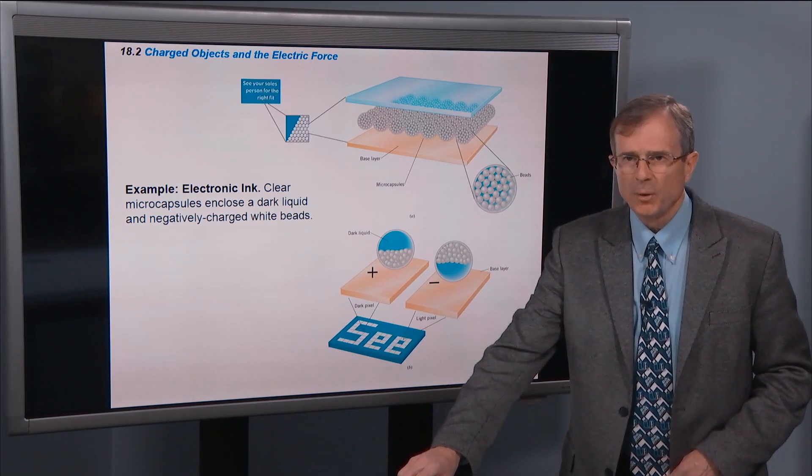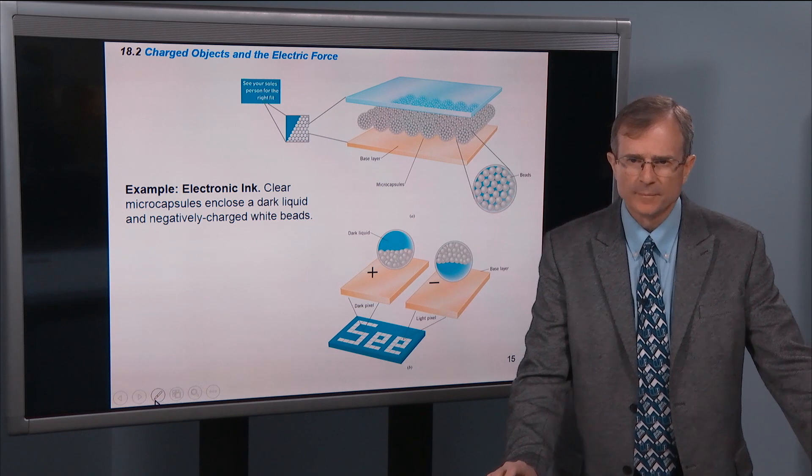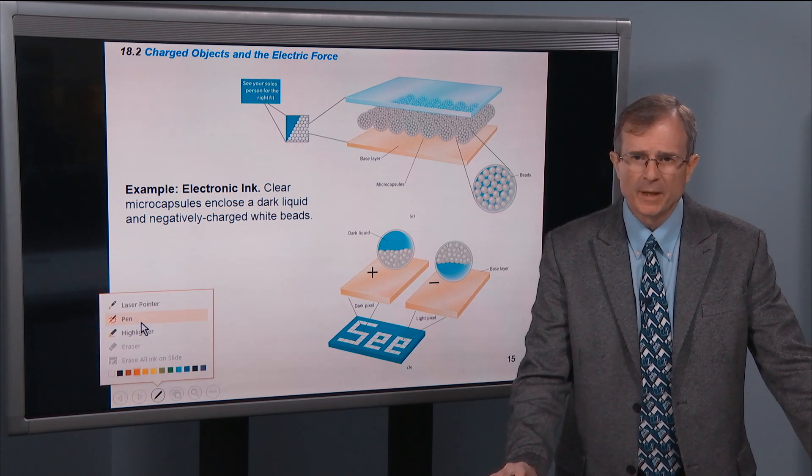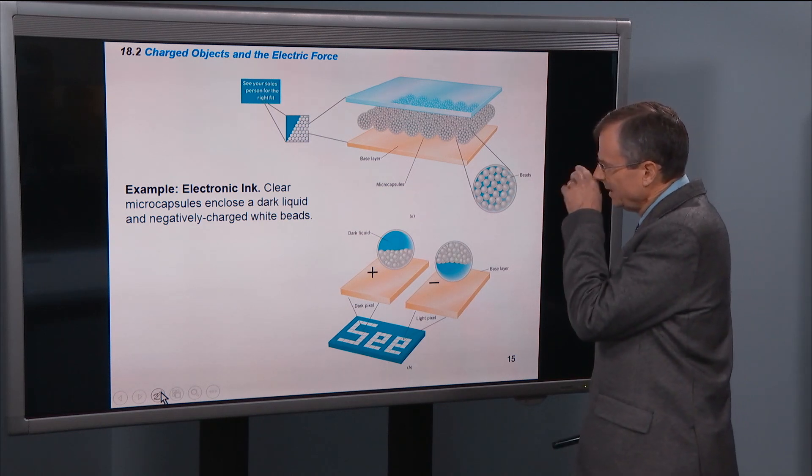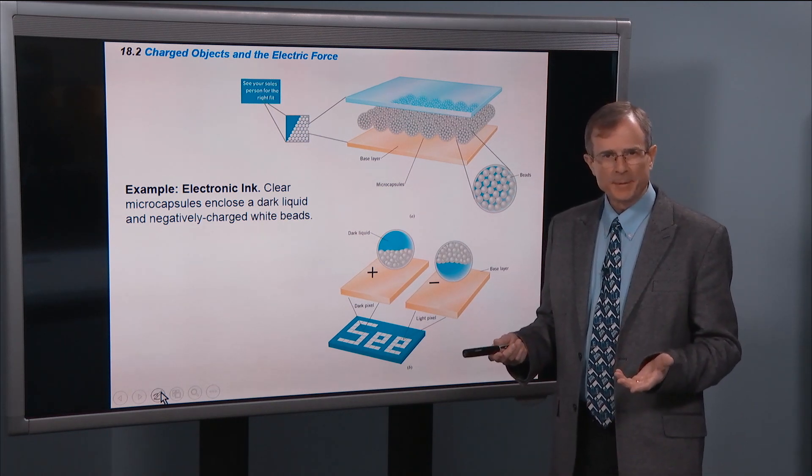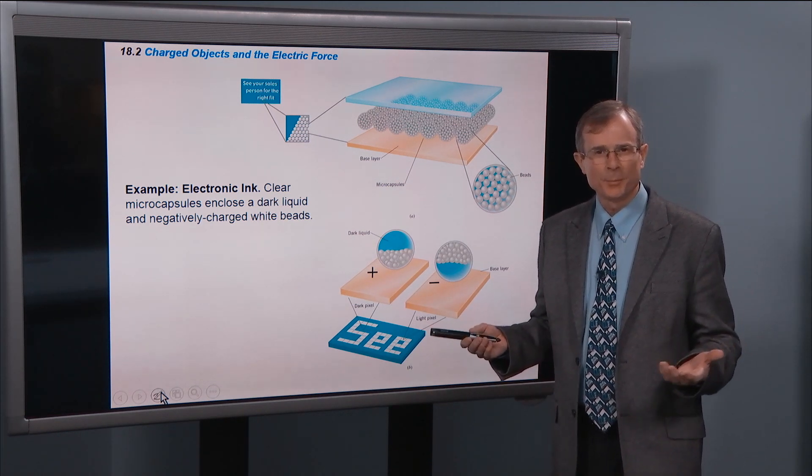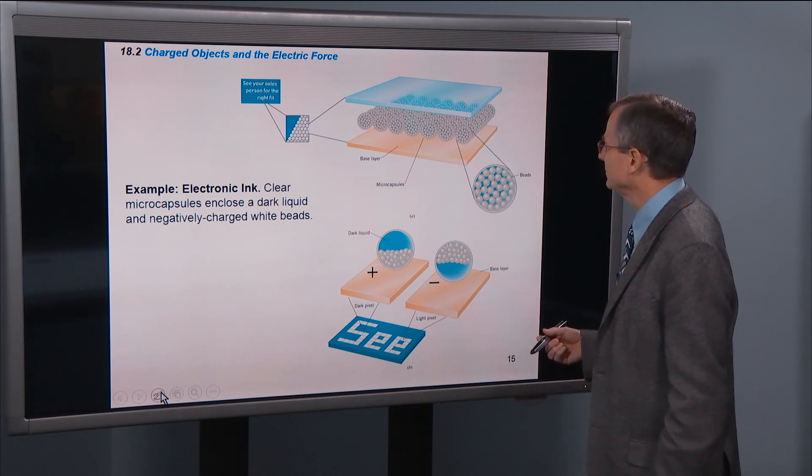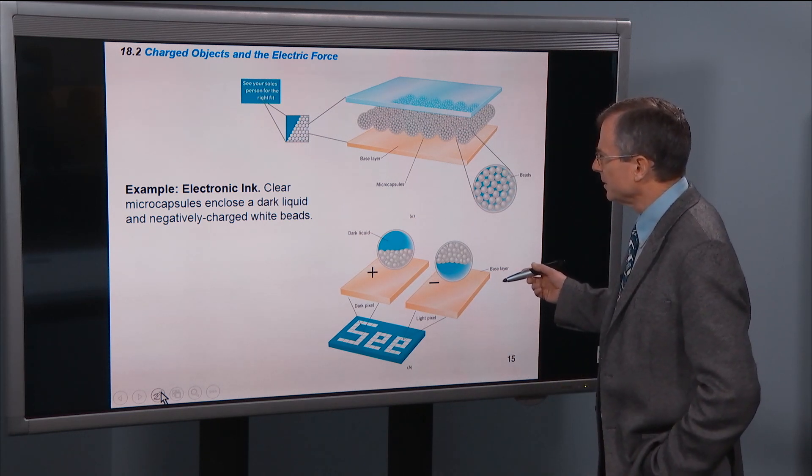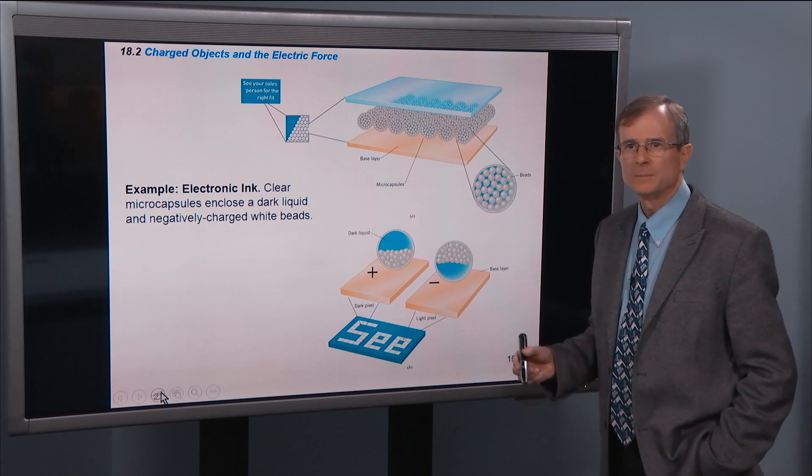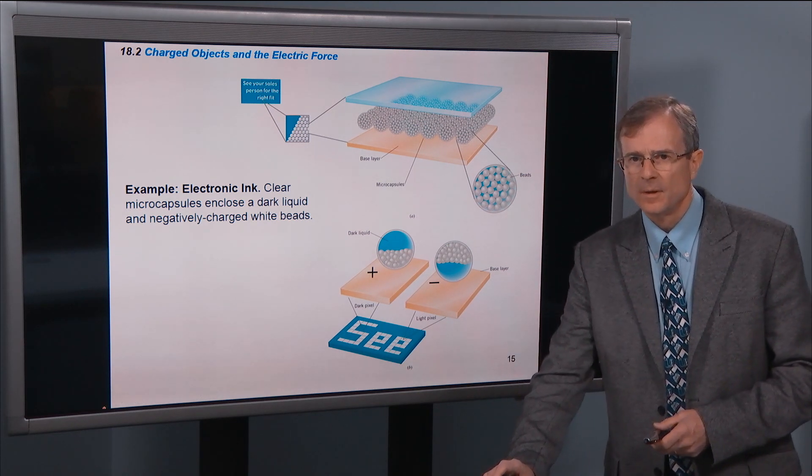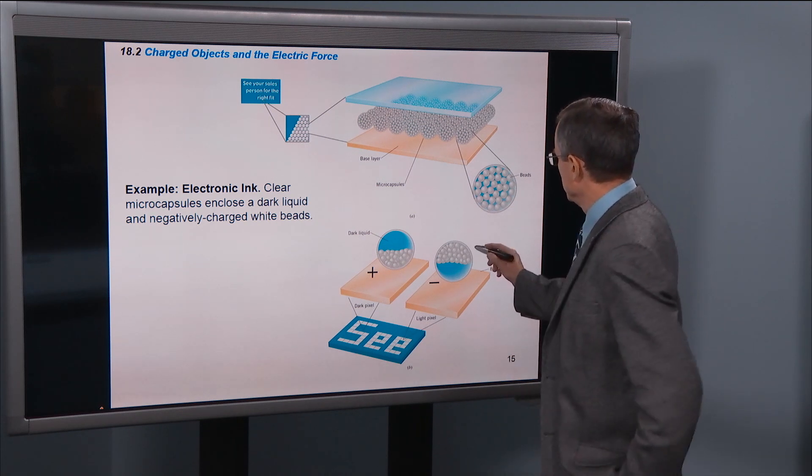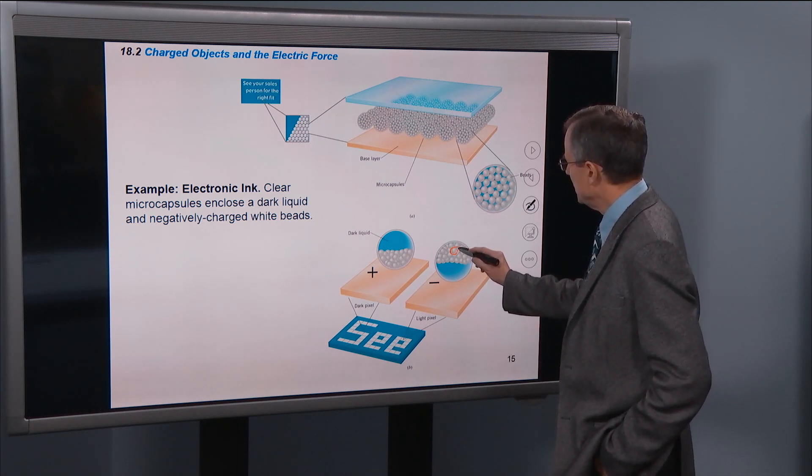Okay, an example, electronic ink, which you may have devices with this, or have heard of it or seen it. Very important application of electrostatics, the principles we've been talking about here. These clear microcapsules, these little white beads that you see here,